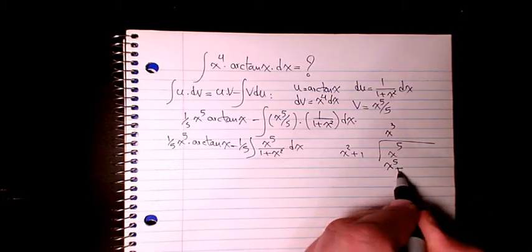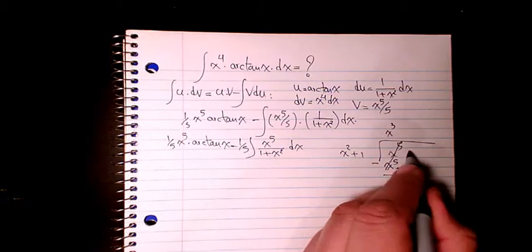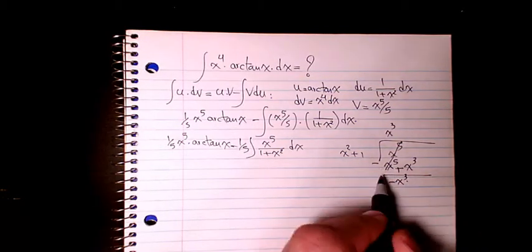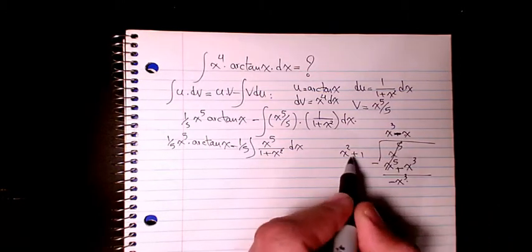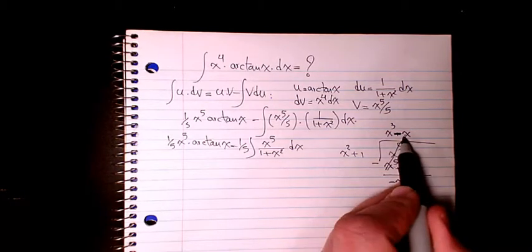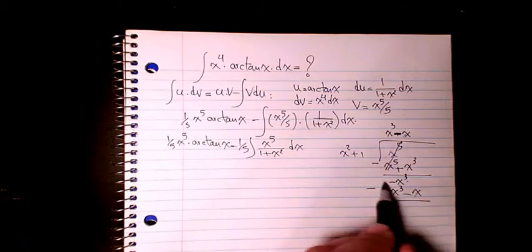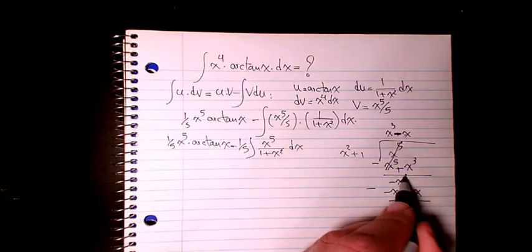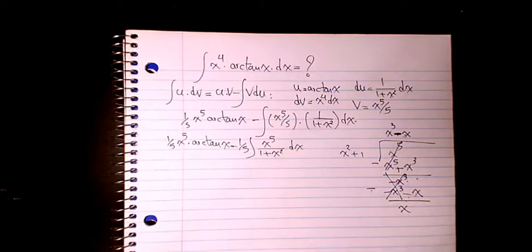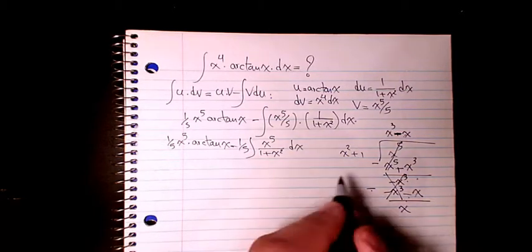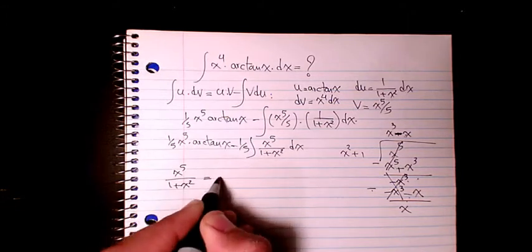Dividing x⁵ by (x² + 1): x² goes into x⁵ giving x³; x³ times (x² + 1) gives x⁵ + x³, subtract to get −x³. Then −x times (x² + 1) gives −x³ − x; subtracting, the x³ terms cancel and we get positive x. So x⁵ over (1 + x²) equals x³ minus x, with remainder x over (x² + 1).